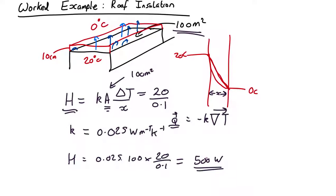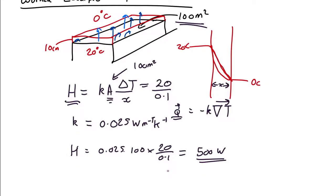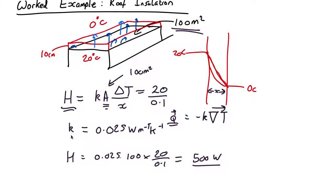So over a whole night, how much are you going to lose? Let's say we have 10 hours, 3600 seconds in an hour. We can multiply that by 500, and it comes out as about 18 megajoules of energy.